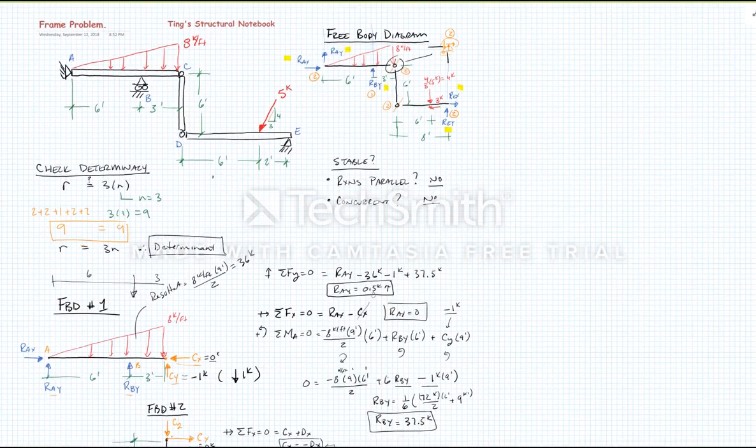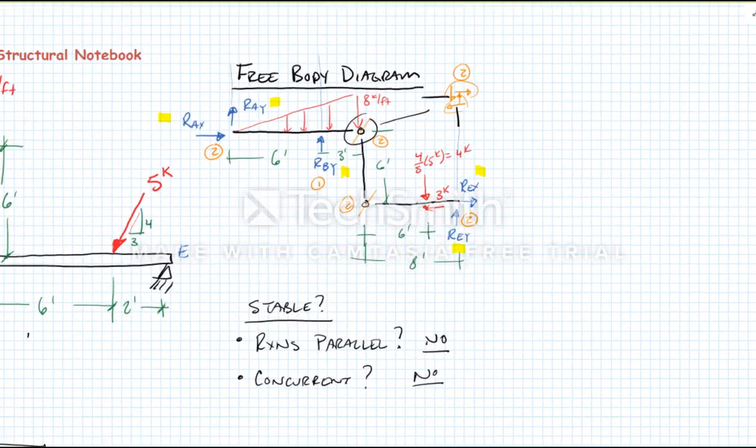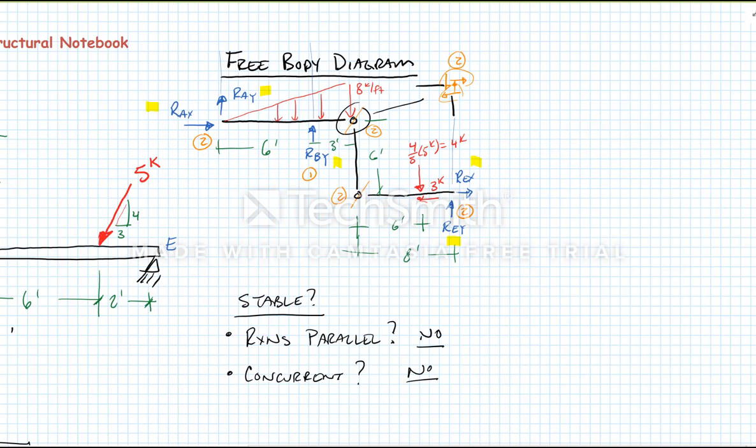So if we zoom back out and walk through it again, the steps we took were: first, look at our structure and draw a free body diagram. So we drew the free body diagram here. We couldn't solve for all our unknowns here. We had five unknowns and only three equations of equilibrium.